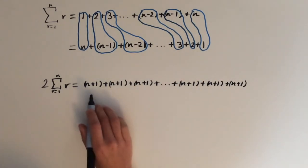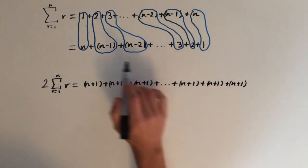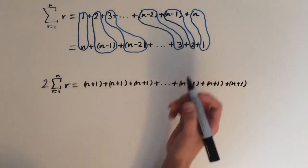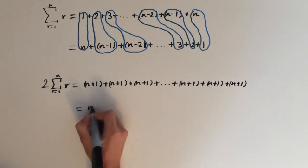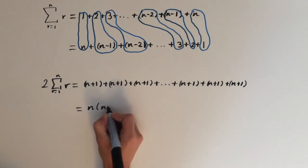Now we can simplify this. How many terms are there in this series? Well, we defined it as 1 to n, so we can simplify this as n times n plus 1.